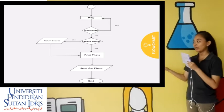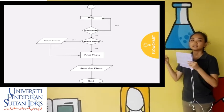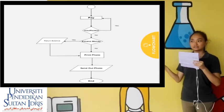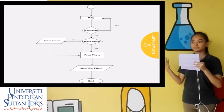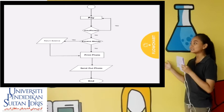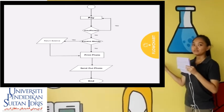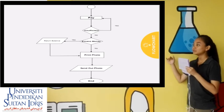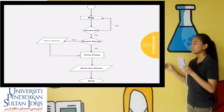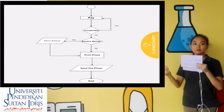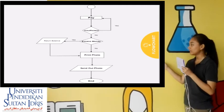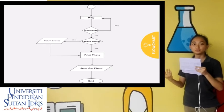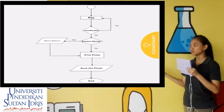The flow chart will show that if there is any excess money, then the system will return the balance. If there is no excess money, it will proceed to the next process. From there, the system will print out photos and send out the photos.